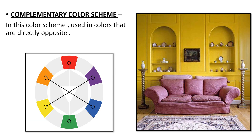Complementary color scheme. In this color scheme, only two colors are used — one color and the color directly opposite it on the color wheel. For example, if you take red, its opposite is green, so red and green are used together. If yellow, its opposite is purple. If orange, its opposite is blue. This is the complementary color scheme.